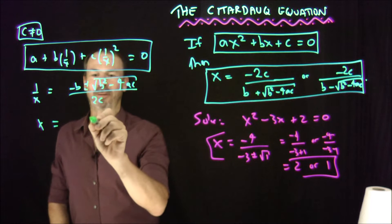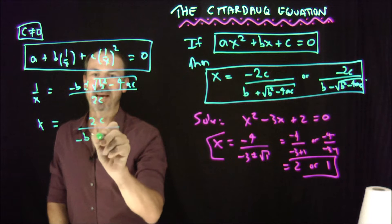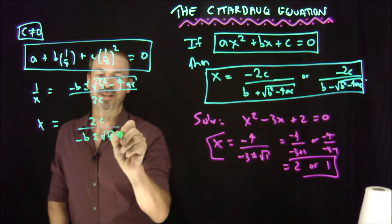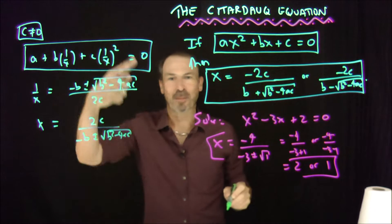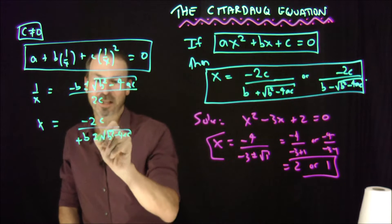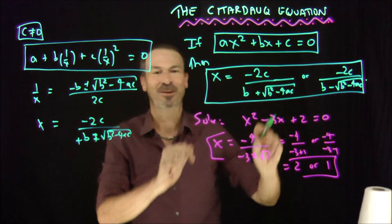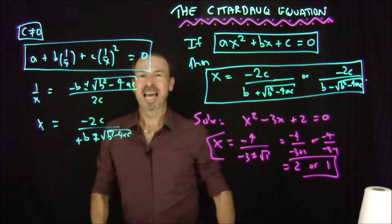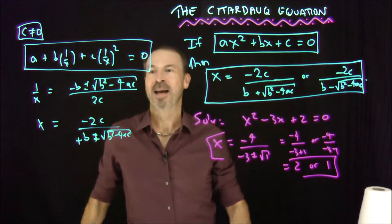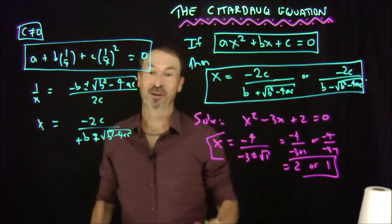Oh, it's still ac. Okay. All over twice a, but watch out here, the a is now c. So x must be the reciprocal of that: 2c / (-b ± √(b² - 4ac)). Or multiply the top and bottom by a minus sign to get those two solutions.